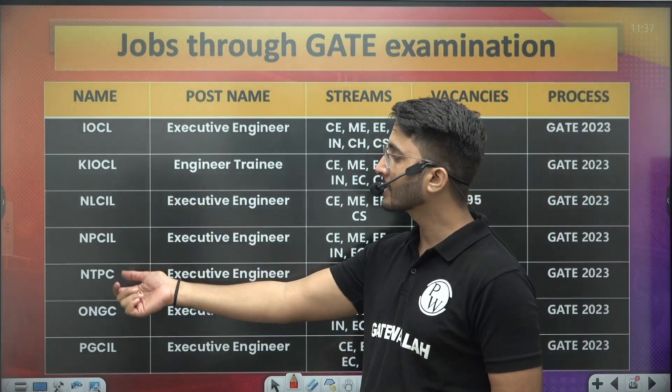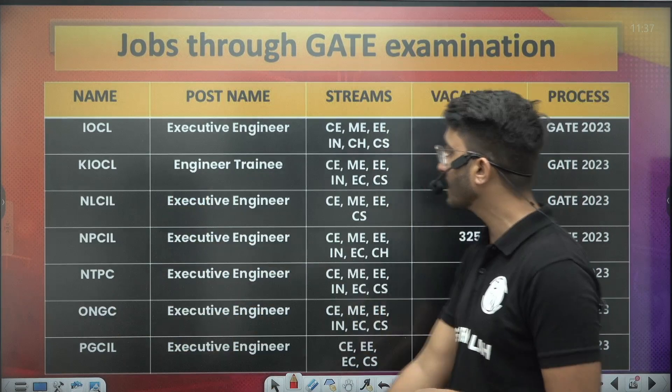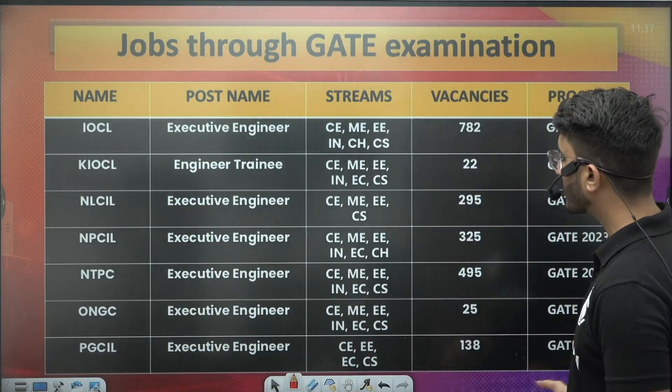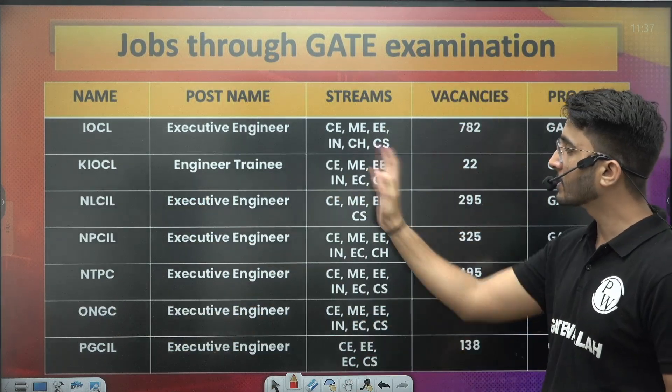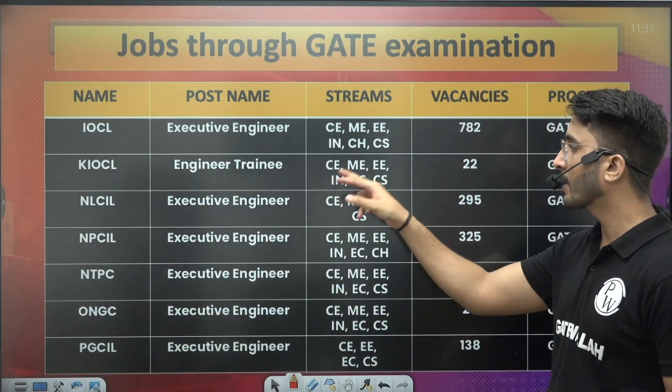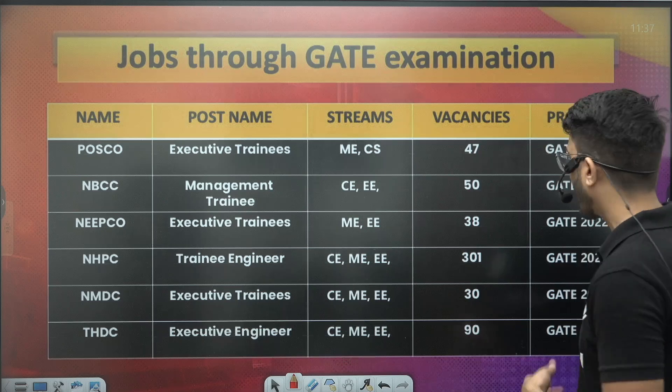IOCL, KOICL, NLCL, NPCL, NTPC, ONGC, and PGCL — you can observe multiple branches and check in which PSUs your branch vacancies are available.